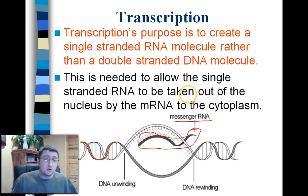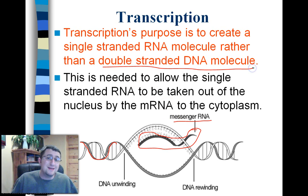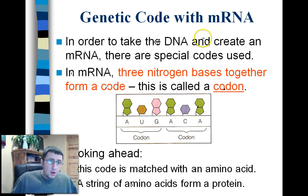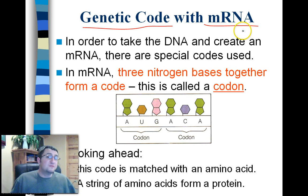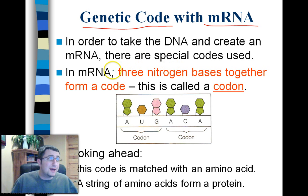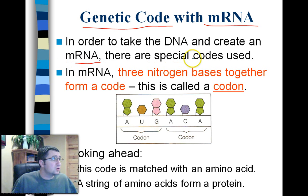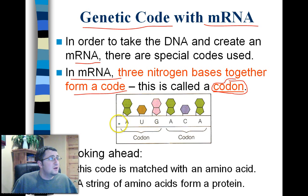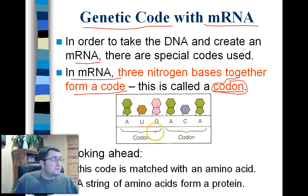Transcription's purpose is to create a single-stranded RNA molecule rather than a double-stranded DNA molecule. There is the genetic code within the mRNA. mRNA is very similar to DNA — the key differences are that it's single-stranded and can leave the nucleus. In order to take DNA and create mRNA, there are special codes used. In mRNA, three nitrogen bases together form a code. This is called a codon. So when we have three of these nitrogen bases — A, U, and G — it forms what's called a codon.